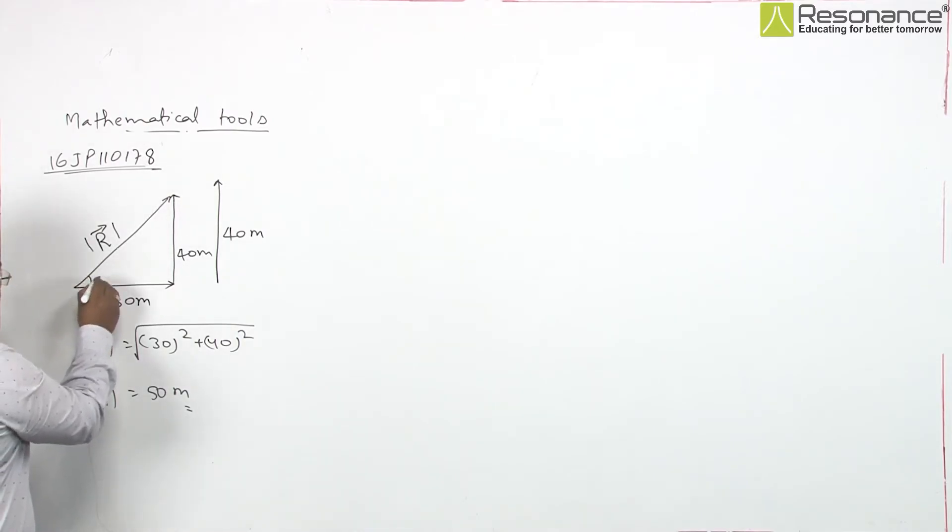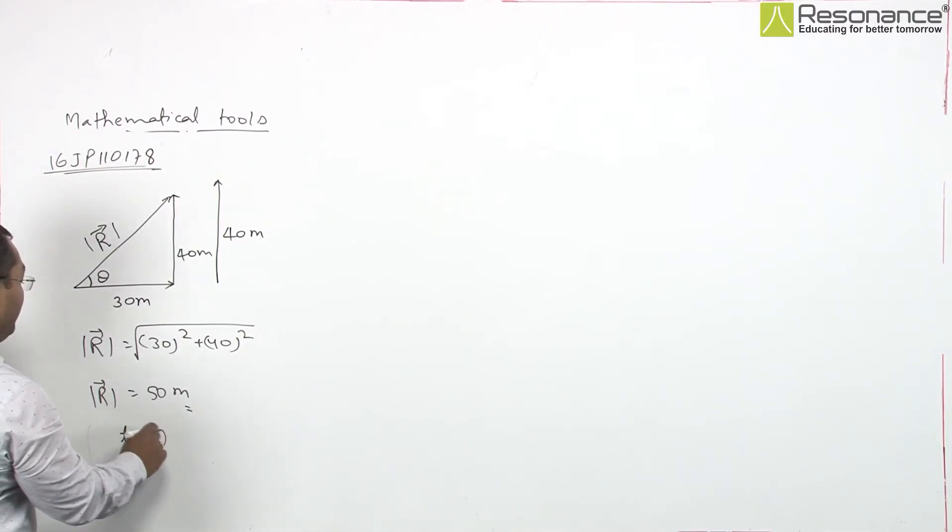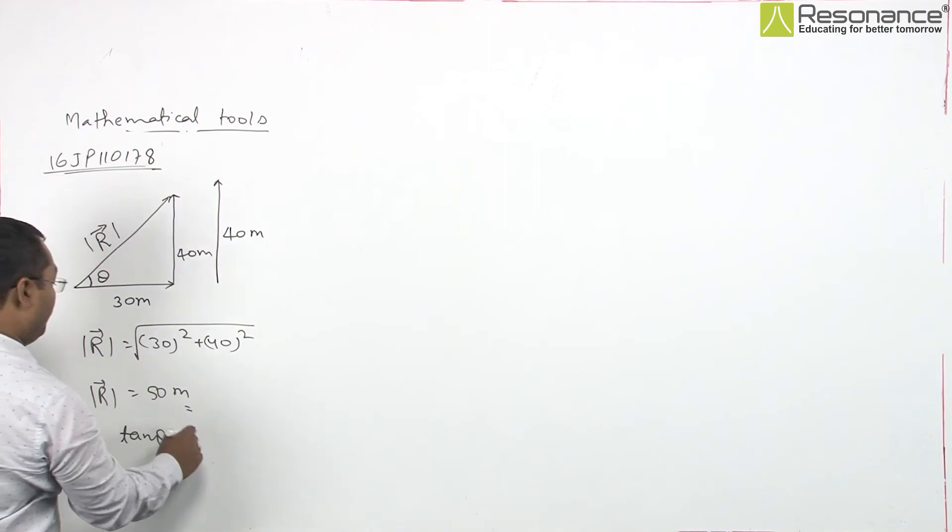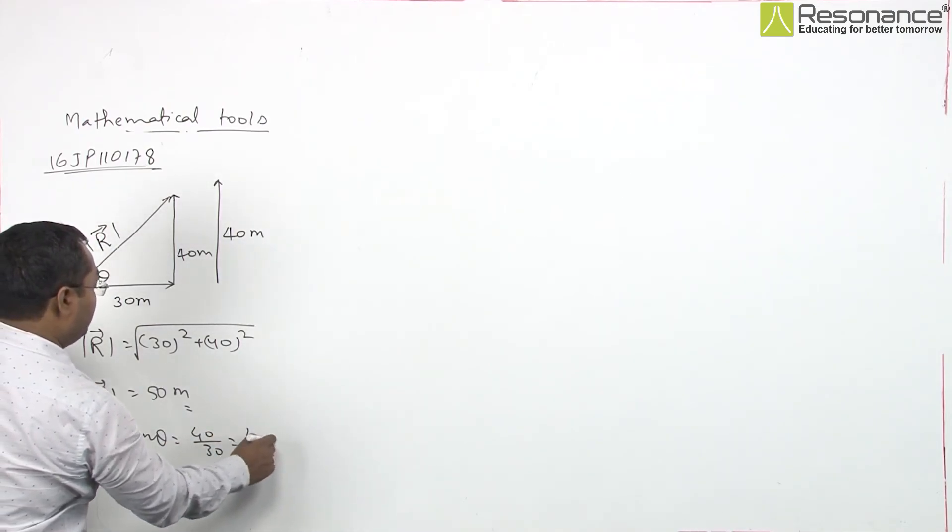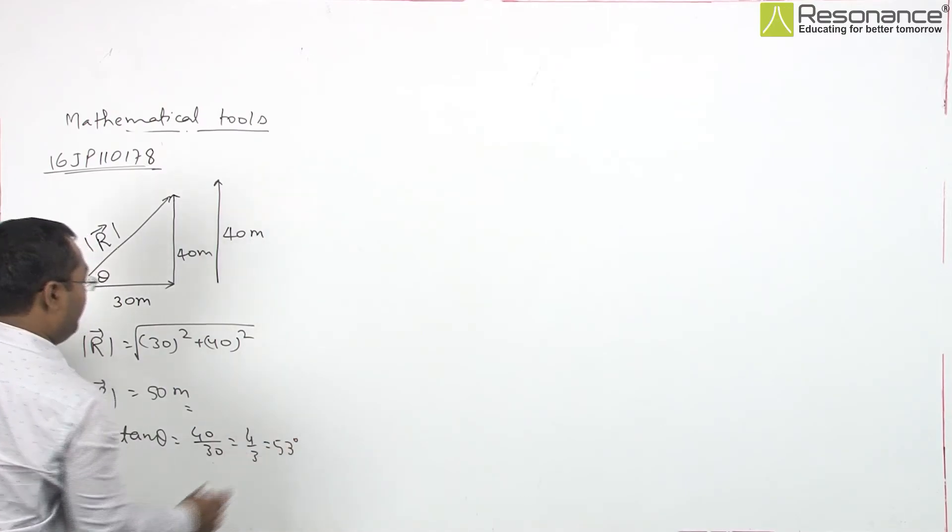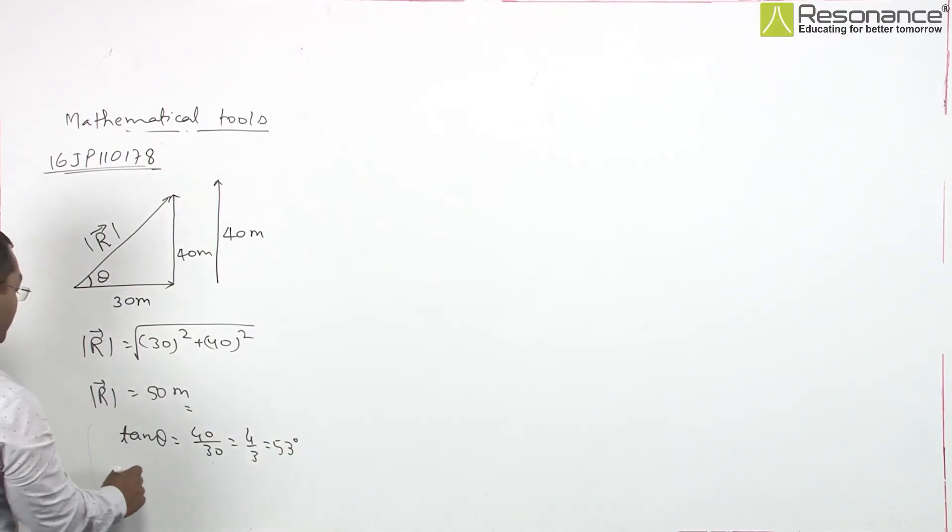And for angle, we put theta over here. So, value of tan theta will be simply 40 upon 30, which is 4 by 3, that is 53 degree angle. Therefore,